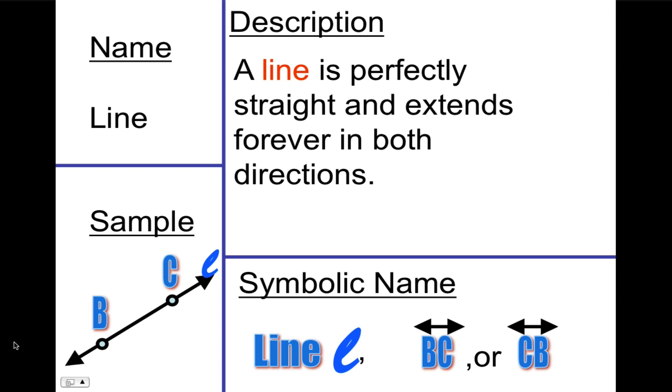However, when you name it using the two points, you draw the symbol of a line above the line. That's a double facing arrow. An arrow that faces both directions. And we'll see that the different symbols above the two letters can change what you're naming. Whether you're naming a line or a segment or ray depends on what the symbol above looks like.